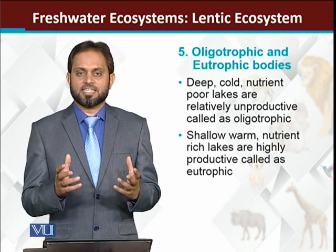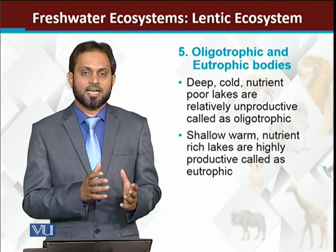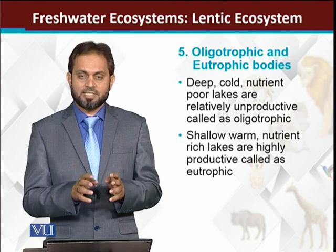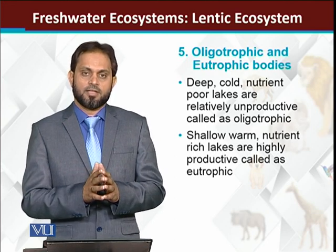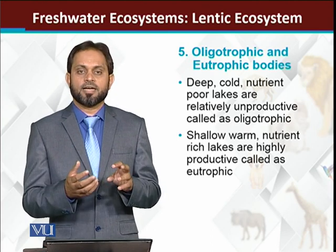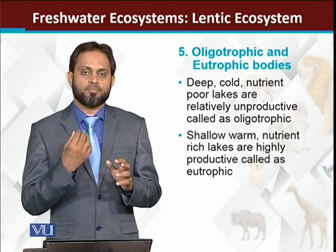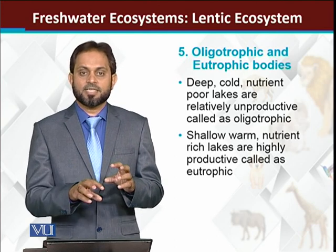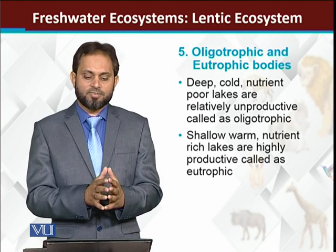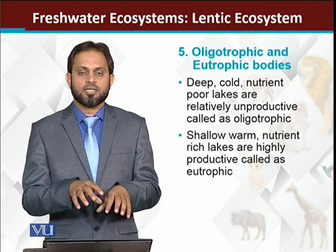Lentic water bodies — lakes — have two major types: oligotrophic lakes and eutrophic lakes. Oligotrophic lakes are those lakes which are nutrient-poor. Nutrient deficiency means fewer producers, reduced animal life, and reduced overall productivity. These are deep, cold water bodies — more deep, cold water bodies are actually the oligotrophic lakes.